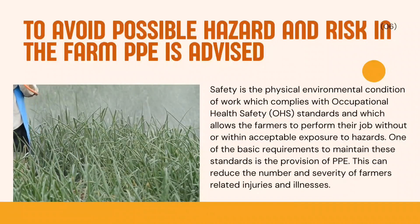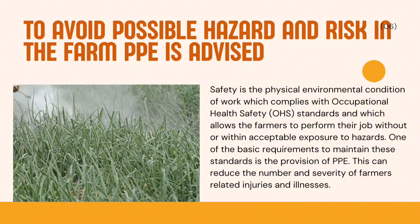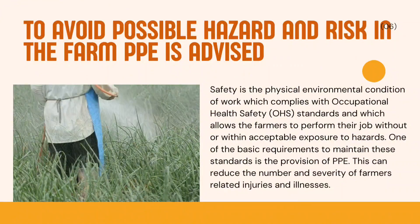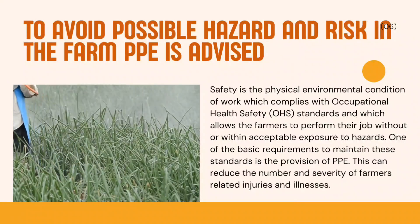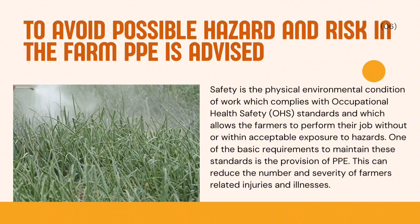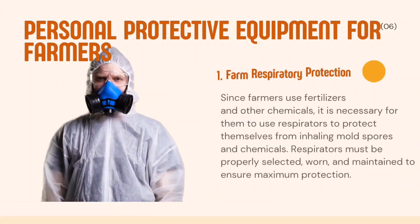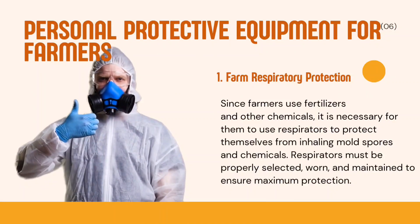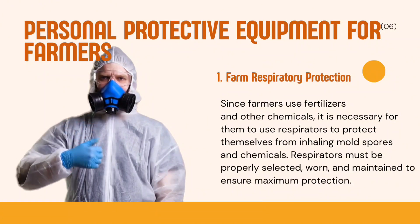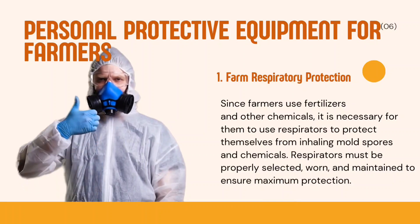Safety is the physical environmental condition of work which complies with occupational health safety standards and which allows the farmers to perform the job without or within acceptable exposure to hazards. One of the basic requirements to maintain these standards is the provision of PPE. This can reduce the number and severity of farmer-related injuries and illnesses. Now let us talk about personal protective equipment for farmers. 1. Farm respiratory protection. Since farmers use fertilizers and other chemicals, it is necessary for them to use respirators to protect themselves from inhaling mold spores and chemicals.